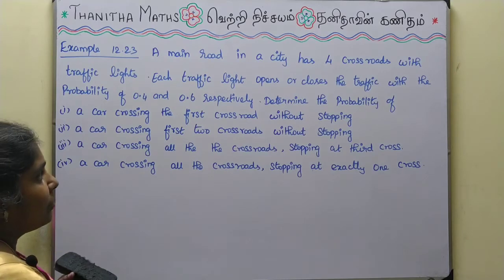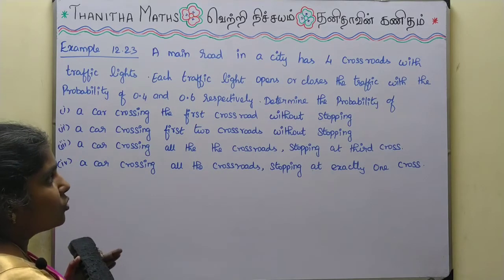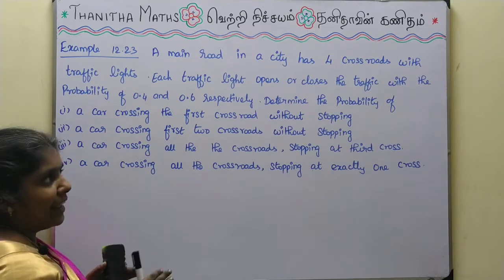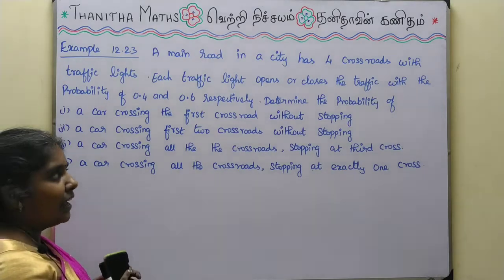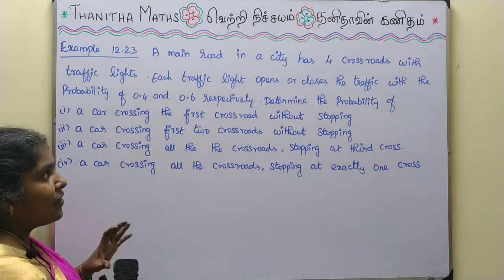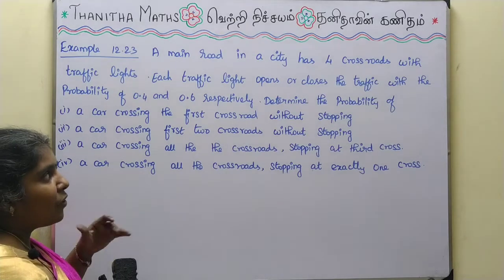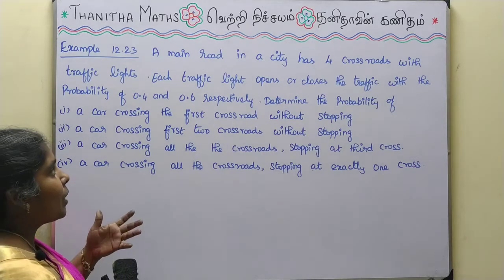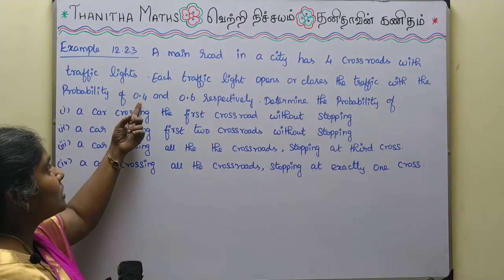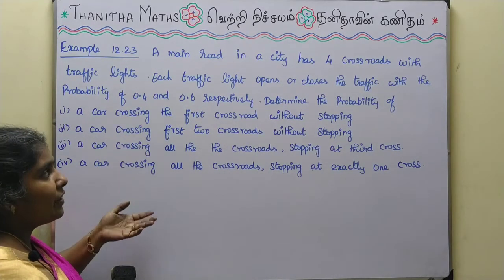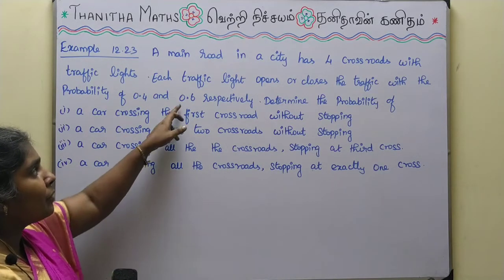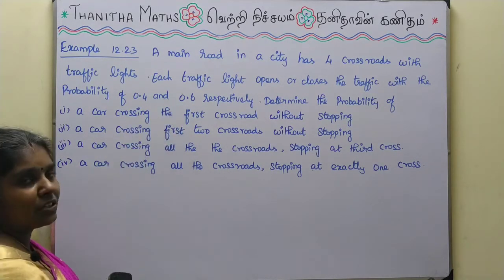If you have 4 crossroads, each has a traffic light. The traffic light opens with probability 0.4 and closes with probability 0.6.